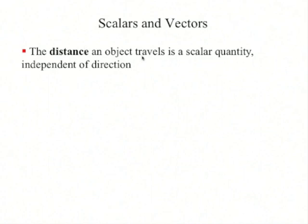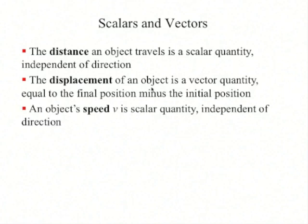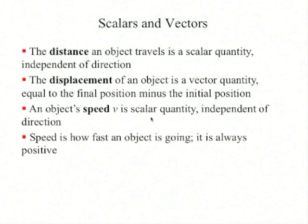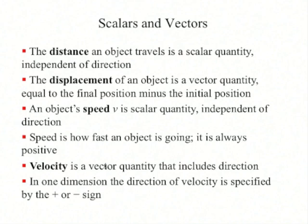Distance is a scalar quantity, which doesn't have a direction, but displacement is a vector quantity, which has magnitude and direction. Speed is a scalar quantity — it's what's read off the speedometer in your car, so it's always a positive number. But velocity is a vector quantity that includes direction. For one-dimensional motion, you can specify the velocity by putting a plus or minus sign to indicate direction.